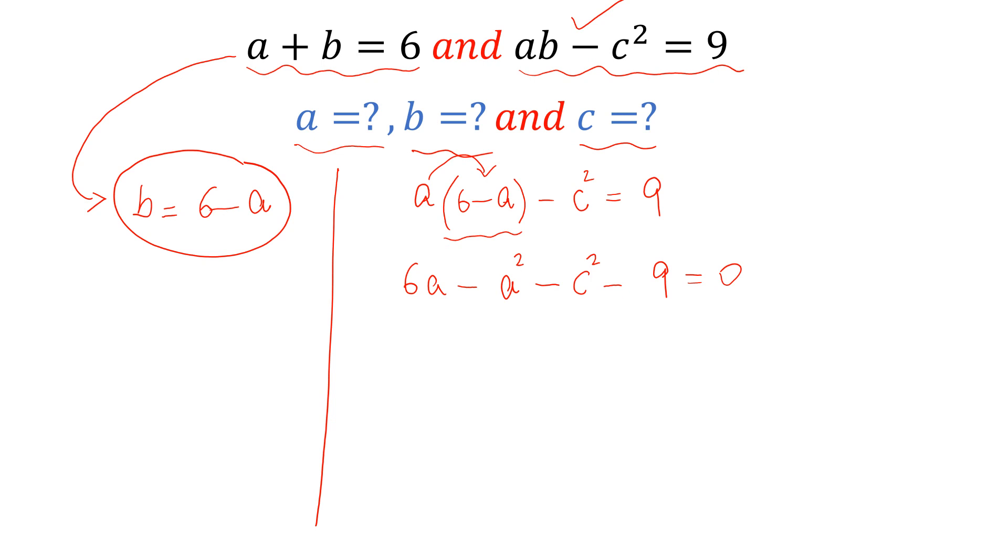Now, multiply this equation both sides by minus 1 and rearrange it. So we can write it A square minus 6A plus 9 plus C square is equal to 0. So this term, A square minus 6A plus 9,